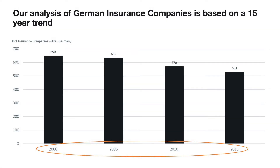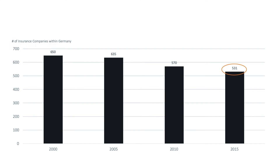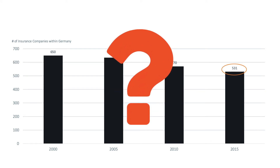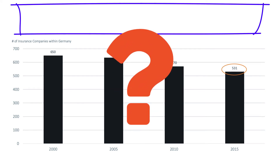'Our analysis of German insurance companies is based on a 15-year trend.' If you want to focus on the time span shown in the graph instead of the actual values, this could be your action title of choice. So really think about what you want your audience to focus on and put it right on top of your slide.